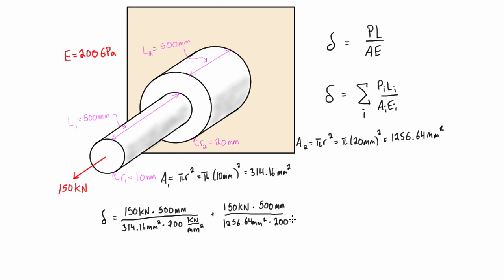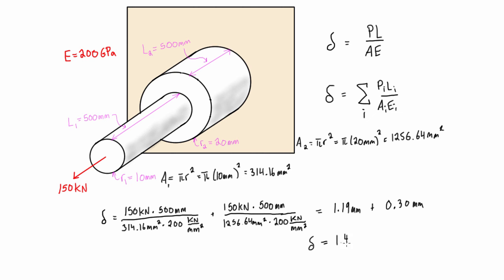We divide section two by 1,256.64 millimeters squared times 200 kilonewtons per millimeter squared. Simplifying, the first term works out to 1.19 millimeters and the second term works out to 0.30 millimeters. Adding those together, the total deformation of the rod is 1.49 millimeters.